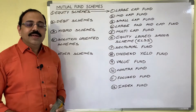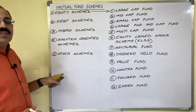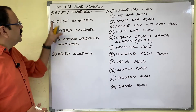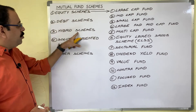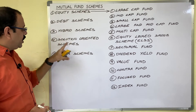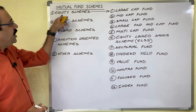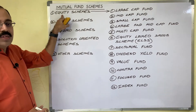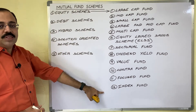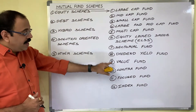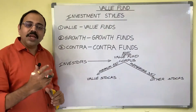SEBI categorized mutual funds into five types: equity schemes, debt schemes, hybrid schemes, solution-oriented schemes, and other schemes. Equity schemes are further classified into 12 types. The present video is about the ninth one — value fund.